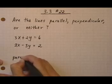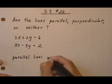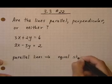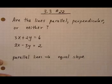First of all, parallel lines have equal slope. There will be identical slopes if they're parallel.